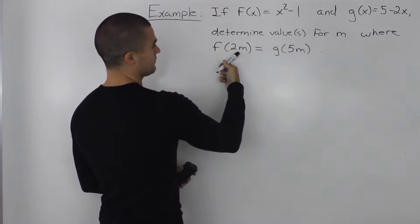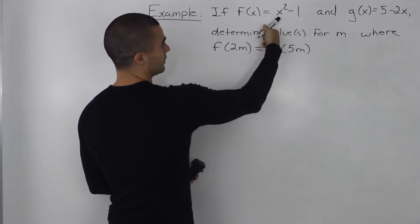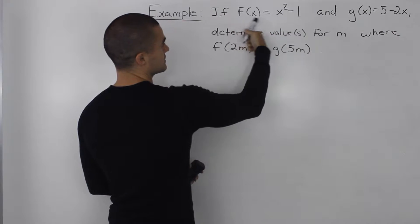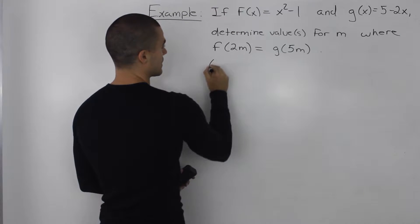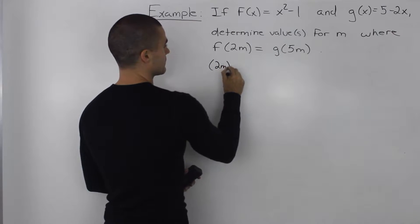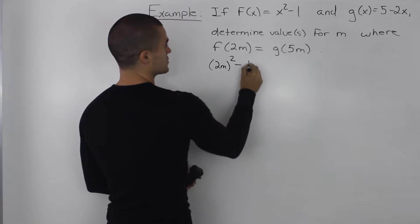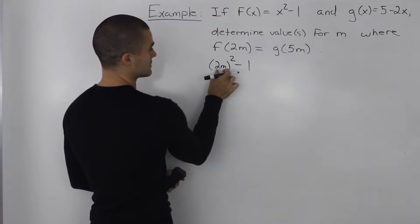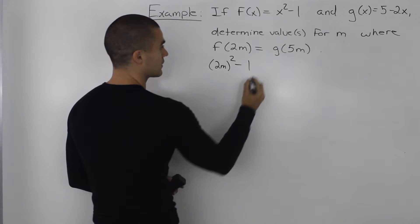So f of 2m, we would just take this 2m and plug it in for the x in this function f of x. So we'd have 2m squared minus 1. So again, this 2m we plugged in for this x value here.